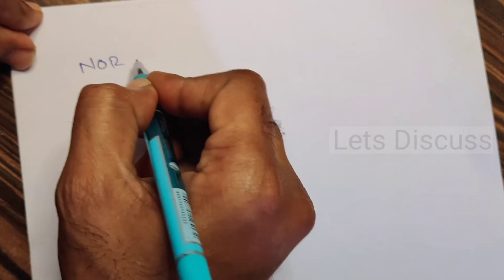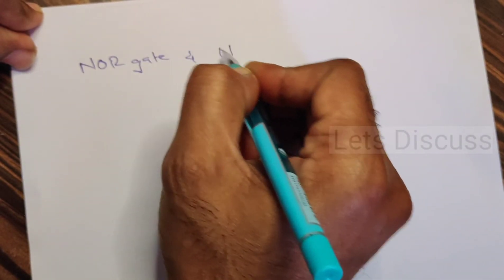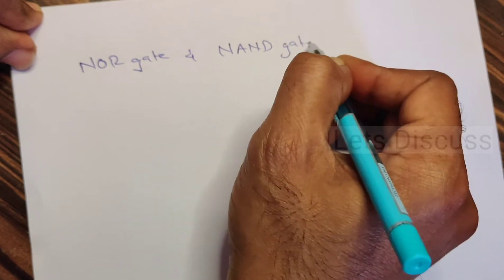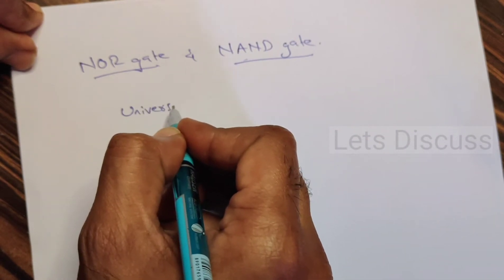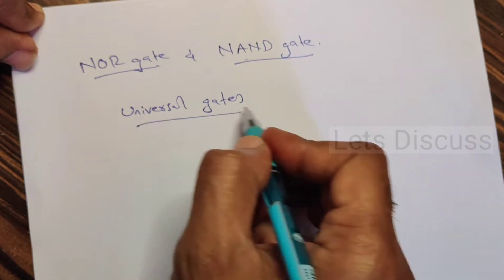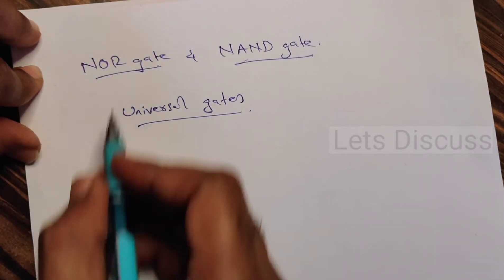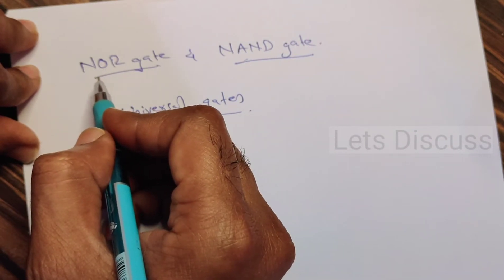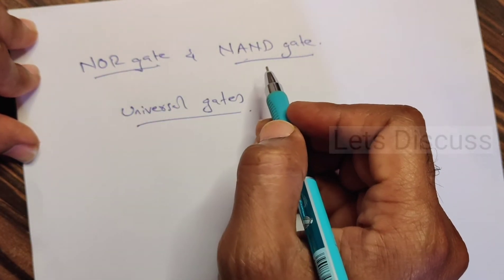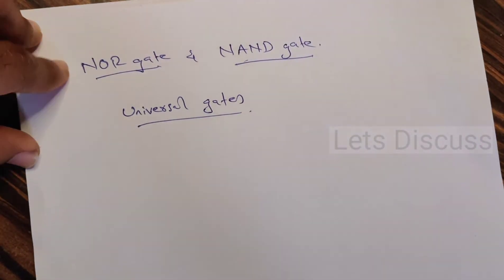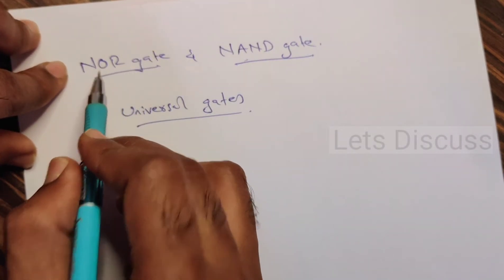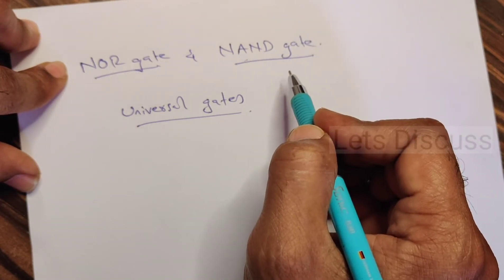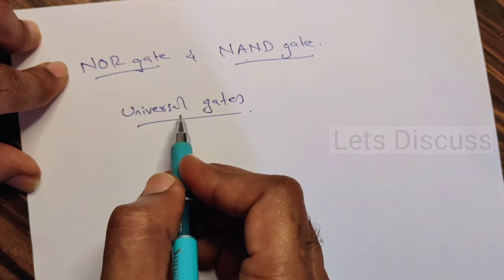Hi friends, let's discuss about NOR gate and NAND gate. These two are also called as universal gates. They are called universal gates because using only NOR gate or only NAND gate we can design the rest of all the gates — AND gate, OR gate, NOT gate — and any logic circuit. This is the reason why we call these both gates as universal gates.